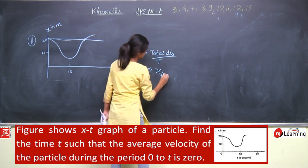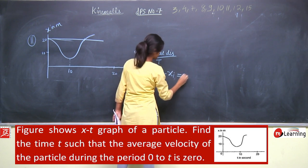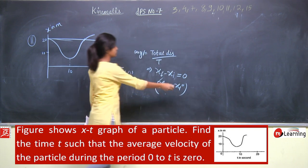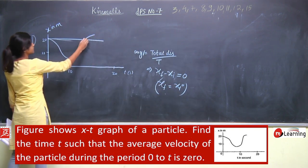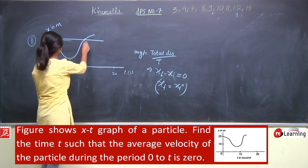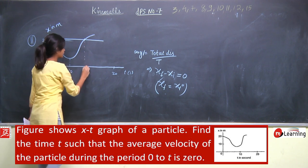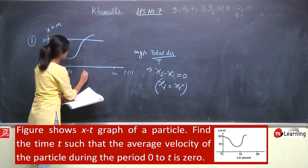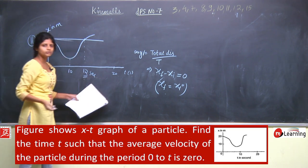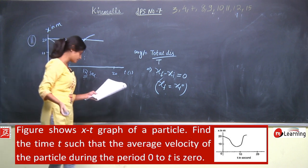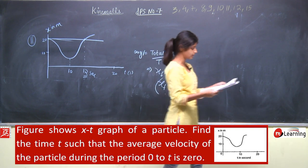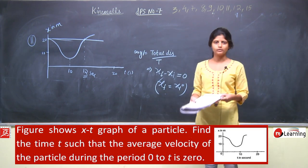It means final displacement minus initial displacement should be 0, that means x final should equal x initial. When the particle returns to its initial position, its average velocity will be 0. From the graph, this time is approximately 12 seconds. We can only give an approximate answer because we cannot derive an equation in this case. So the approximate answer is 12 second.